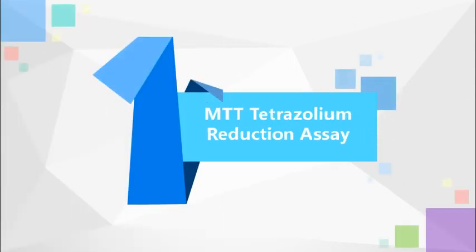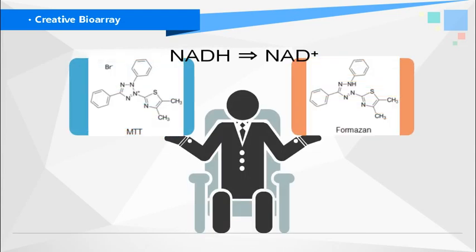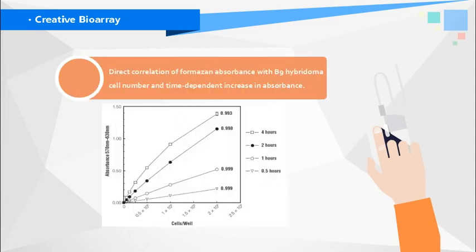The MTT tetrazoleum reduction assay was the first homogenous cell viability assay developed for a 96-well format suitable for high-throughput screening. NADPH-dependent cellular oxidoreductase enzymes in viable cells can reduce the tetrazoleum dye MTT bromide to its insoluble formazan, which has a purple color. The quantity of formazan is measured by recording changes in absorbance at 570 nm using a spectrophotometer, and under defined conditions it can reflect the number of viable cells present.